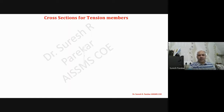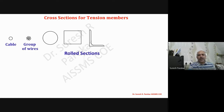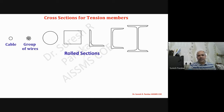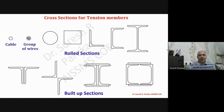Now for cross sections for tension members, we have mainly cables, then a group of wires also known as strands — which are generally required in prestressed concrete — and then different rolled sections. We have solid sections, hollow circular sections, hollow rectangular or square sections, angle sections, channel sections, I-sections, T-sections, and built-up sections.